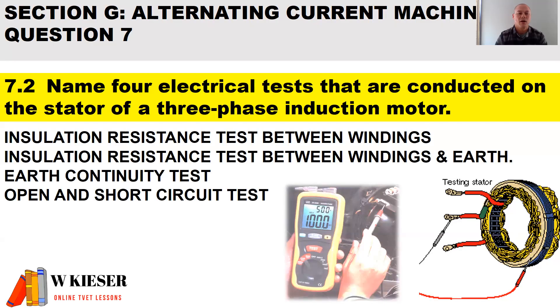The four tests are: the insulation resistance test between windings, the insulation resistance test between windings and earth, the earth continuity test, and the open and short circuit test.